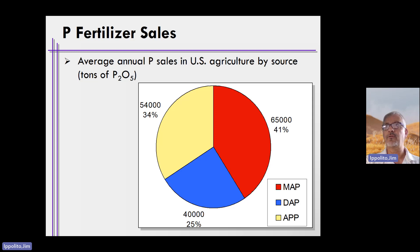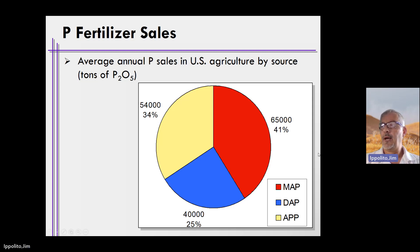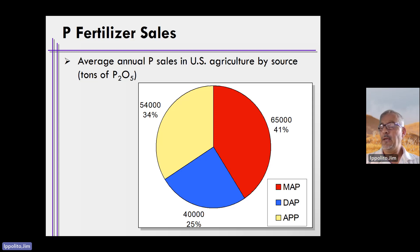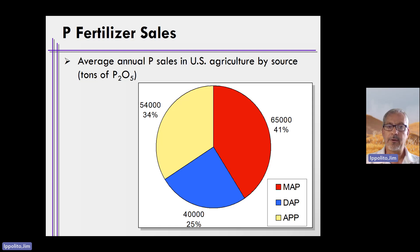Looking at average annual sales of phosphorus fertilizers in the U.S. based on tons of P2O5 sold, triple super phosphate doesn't appear on this list, but mono ammonium phosphate, diammonium phosphate, and ammonium polyphosphate do. The split is not quite even but relatively close — roughly a third each. What we'll do next is describe all four major fertilizers, including triple super phosphate, so you understand where each comes from.